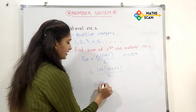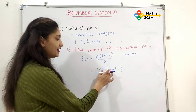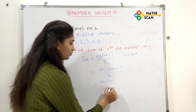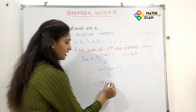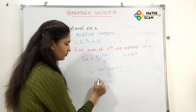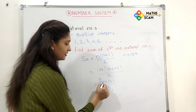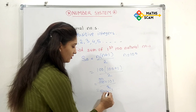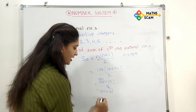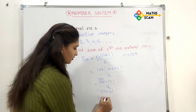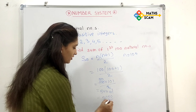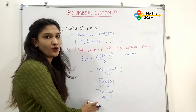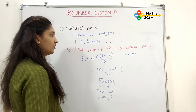First solve the bracket: 100 plus 1 equals 101. So 100 into 101 divided by 2. Dividing 100 by 2 gives 50. So 50 into 101. The answer is 5050. So the sum of the first 100 natural numbers is 5050.